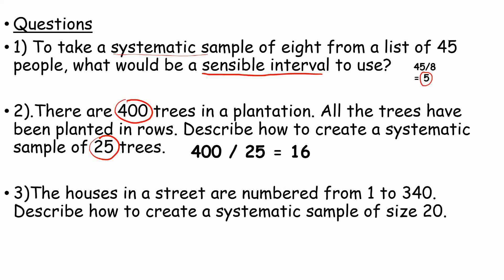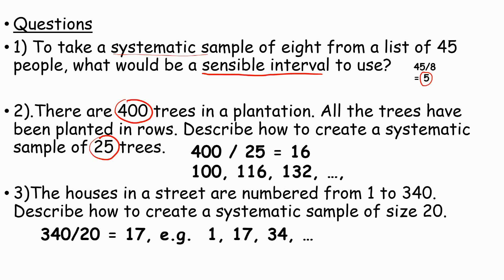It wouldn't necessarily be random unless you choose a random number to start with. The houses on a street are numbered from 1 to 340. Describe how to create a systematic sample of size 20. It's the same idea — we simply do 340 divided by 20, which is 17. Then we could pick the first house, the 17th house, the 34th house, and so on.